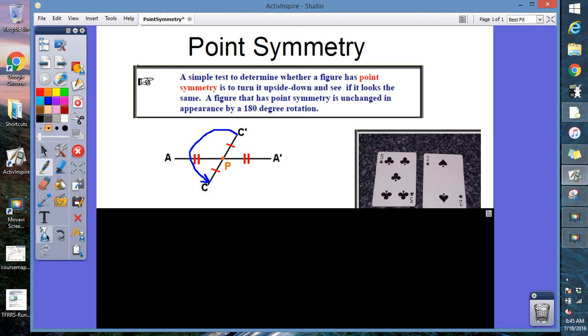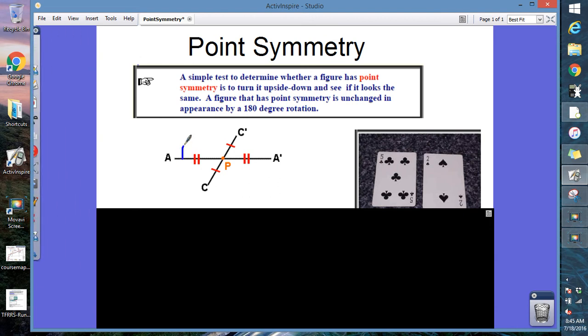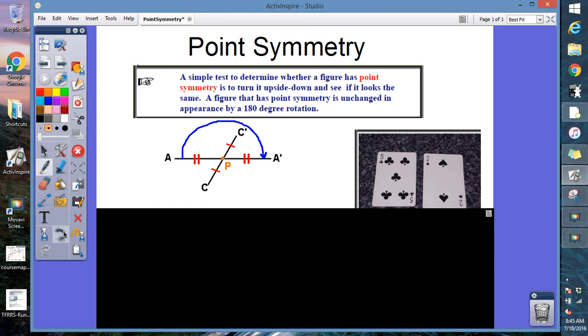But if we did it with line A, we rotated line A 180 degrees, line A would also have point symmetry because it would look exactly the same. There's lots of definitions out there but I think that's just the quickest way to think about it.